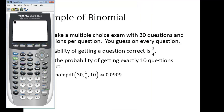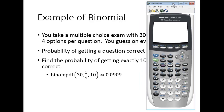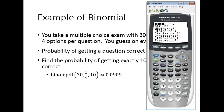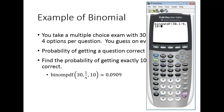Let's show that on the calculator. Go to second, then the variables key for distributions, scroll to binomPDF and hit enter. Enter 30, then 1/4 (which the calculator treats as 1 divided by 4), then 10. The result is 0.0908..., which rounds to about 0.0909 — roughly a 9% chance of getting exactly 10 correct by guessing.